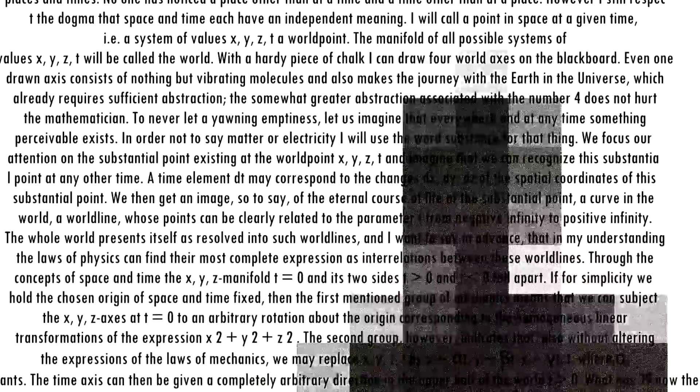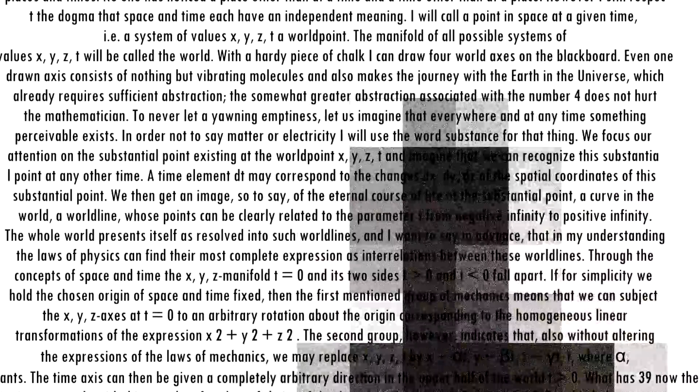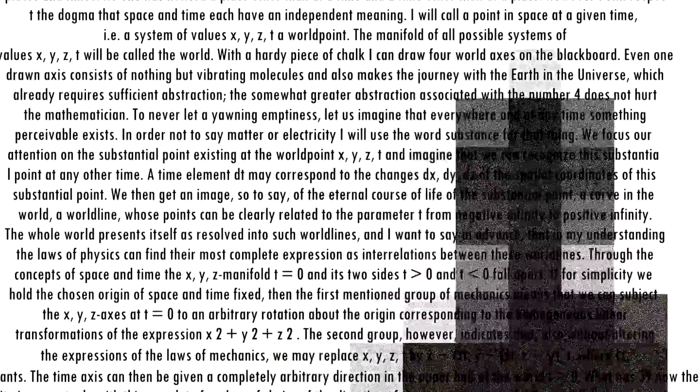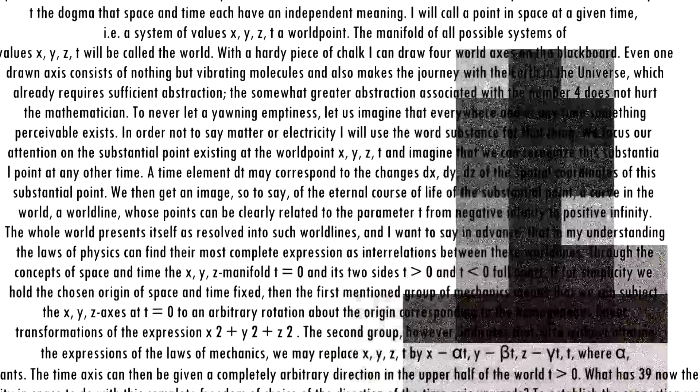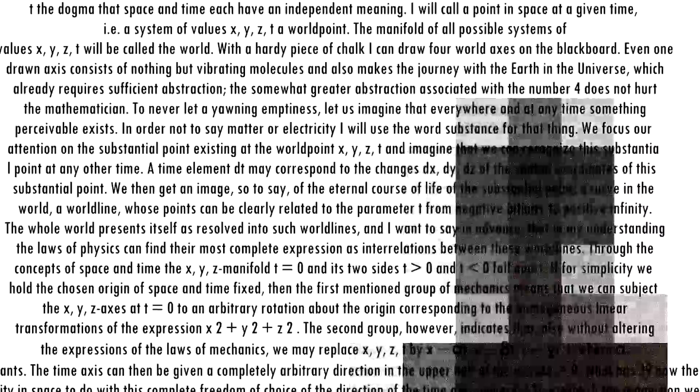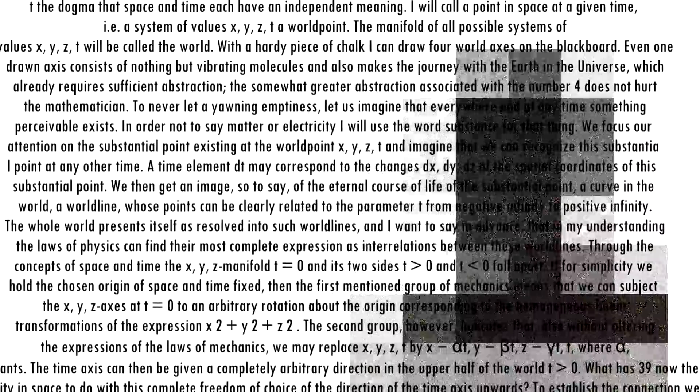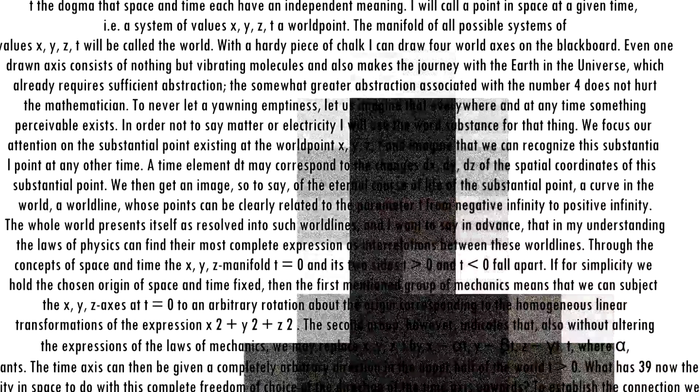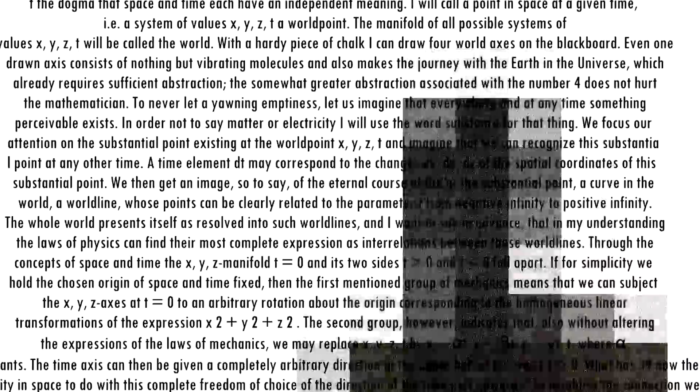and imagine that we can recognize this substantial point at any other time. A time element dt may correspond to the changes dx, dy, dz of the spatial coordinates of the substantial point. We then get an image, so to say, of the eternal course of life of the substantial point, a curve in the world, a world line, whose points can be clearly related to the parameter t from negative infinity to positive infinity.